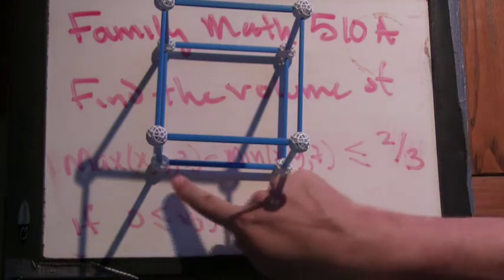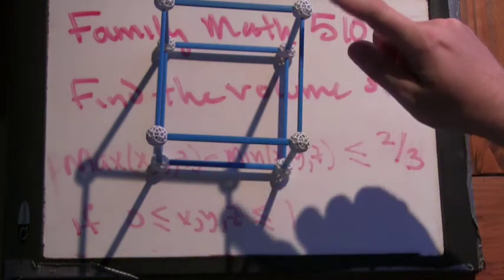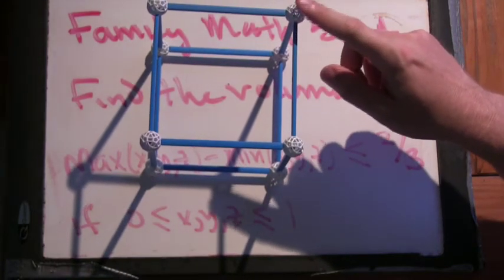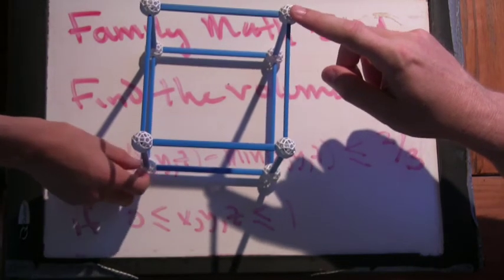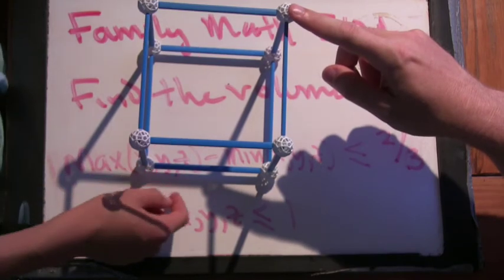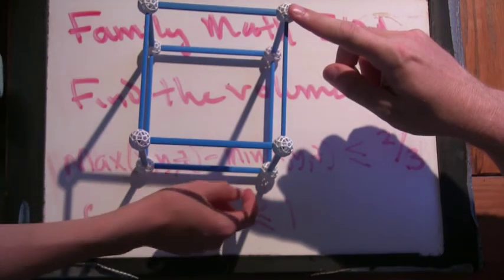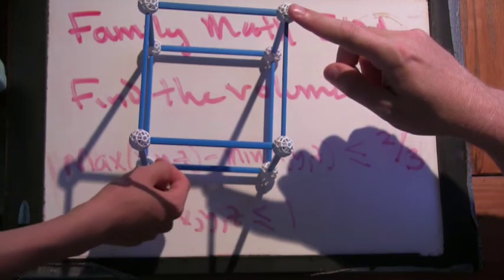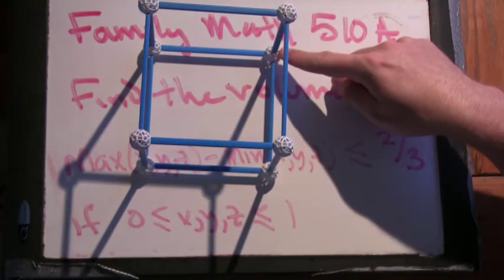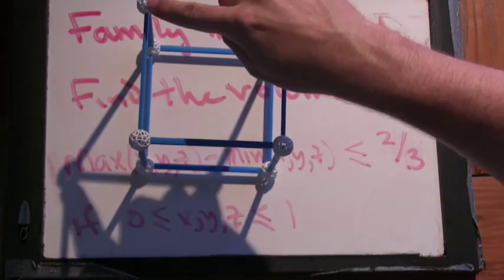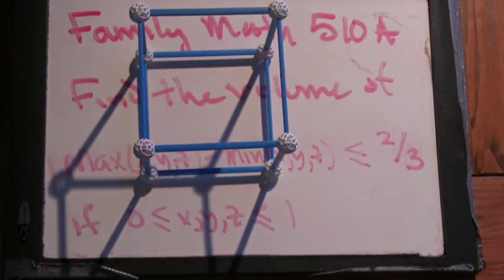And so, if this is 0, and I go 1, 1, 1, what is this point over here? What are the coordinates of this point? Is the origin here? Yep. So this is 1, 1, 1? Yep, that's right. How about this one here? 1, 1, 0. How about this one here? 0, 1, 1. Very good.